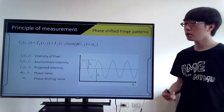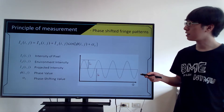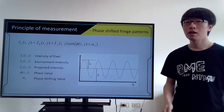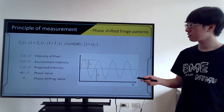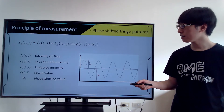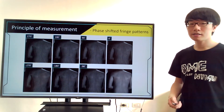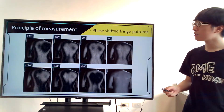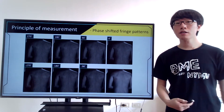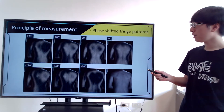This is the general equation of light intensity picked up in each image. The light intensity gathered by the camera is IK, the background light intensity is IB, and the light intensity projected by the projector is IA. Theta stands for phase value and alpha K stands for phase-shifting value. Here we can see the seven fringe images, where the patterns deform along the surface of the target, starting from 270 degrees with a 90-degree phase-shifting value, going all the way to minus 90 degrees.